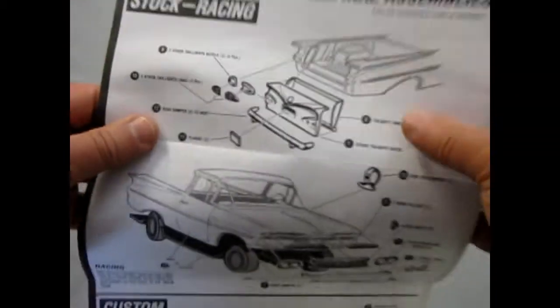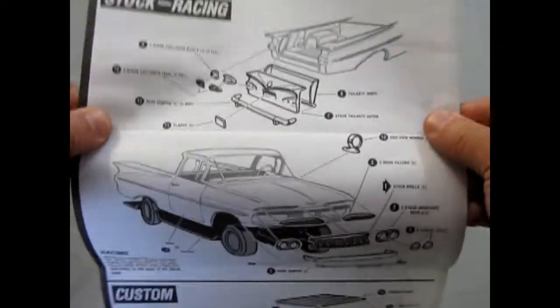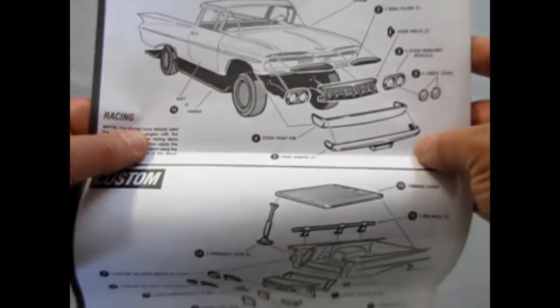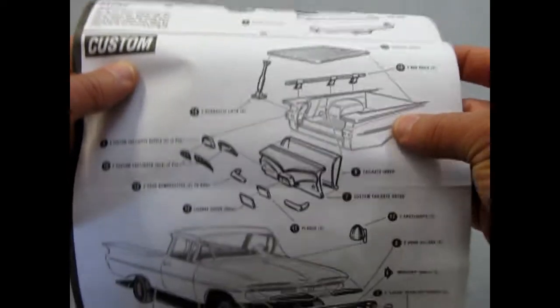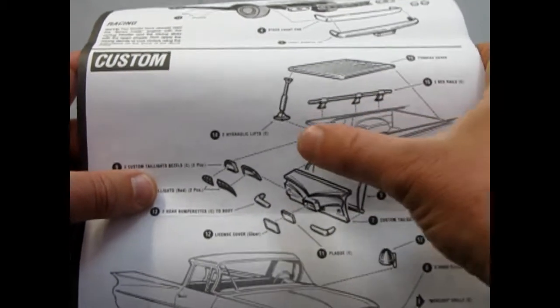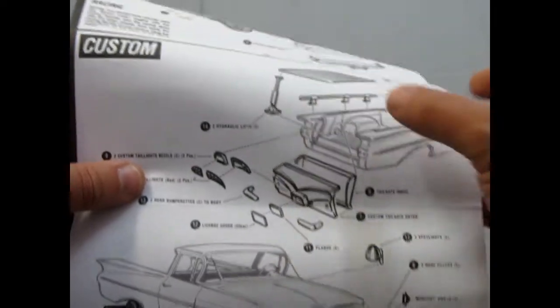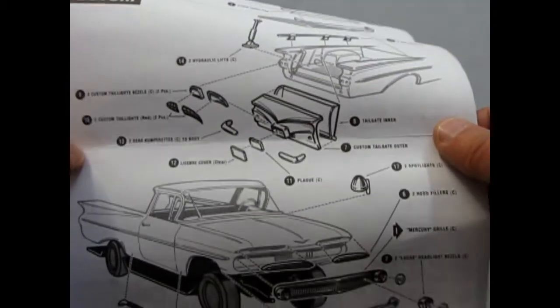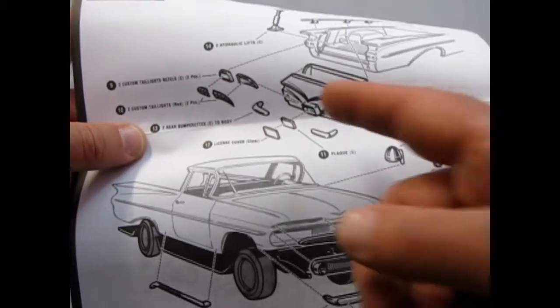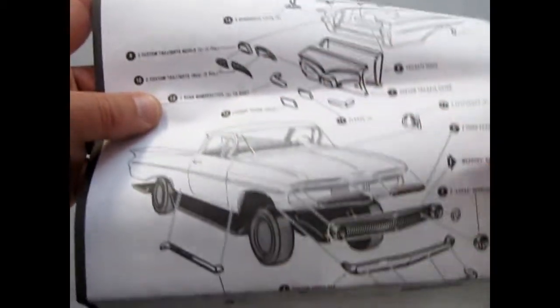And then of course the cool part at the back. There's your operating tailgate with the stock rear lights and the stock components. You also get a tonneau cover and these bed rail bars as well as hydraulic lifts to show your cover up. And a complete custom rear tailgate piece with custom tail lights as well.